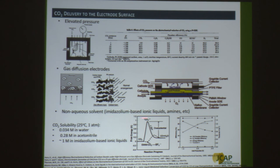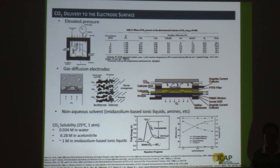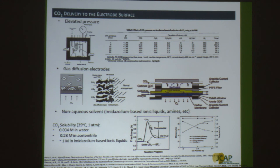Another attractive approach is to use non-aqueous solvents, where CO2 solubility is 20–30 times higher than in aqueous solution. People have used ionic liquids — imidazolium-based ionic liquids — and amines. All these strategies aim to maintain high CO2 concentration at the electrode surface, not only increasing attainable CO2 current density but also improving Faradaic efficiency by making relatively more CO2 reduction versus hydrogen evolution reaction, which you want to suppress.